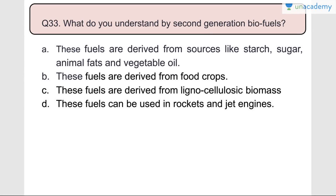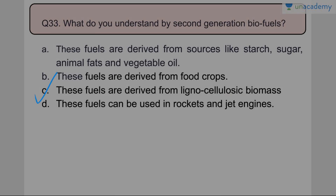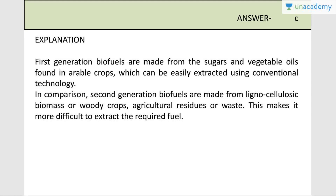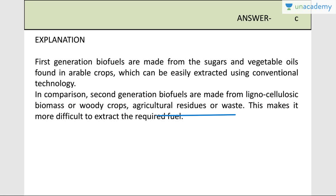Question number thirty-three: What do you understand by second generation biofuels? First generation biofuels are made from sugars and vegetable oils using conventional technology. Second generation biofuels are made from woody crops, agriculture residues, or waste - basically lignocellulosic biomass. Answer is C. Second generation biofuels are made from lignocellulosic biomass or woody crops and agricultural residue or waste, making it more difficult to extract the required fuel compared to first generation biofuels.